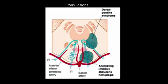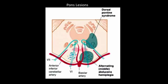Moving up to the pons, you can have a medial circulation problem or an anterior inferior cerebellar artery circulation deficit. If there is a medial or midline problem, you will have corticospinal tract involvement — loss of motor strength on the opposite side — and medial lemniscus involvement — loss of position and vibration sense on the opposite side. You will also have sixth nerve paralysis on the same side, so the patient won't be able to look laterally.